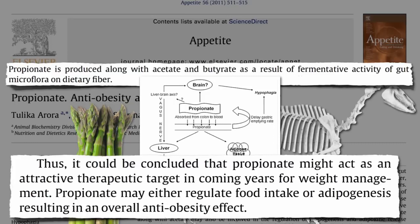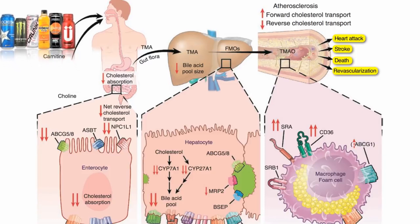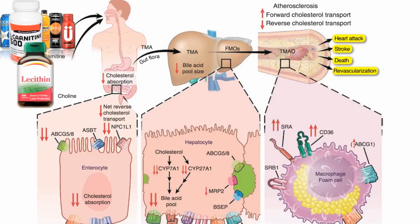So eat fiber, select for fiber-eating bacteria. But if you eat a lot of animal products, you may instead be selecting for animal-product-digesting bacteria, and some of those waste products like trimethylamine may be harmful. Even if you eat vegan, though, you're not necessarily out of the woods if you regularly drink carnitine-containing energy drinks, take carnitine supplements, or lecithin supplements which contain choline — presumably you'd foster and maintain those same TMAO-producing bacteria and increase your risk of heart disease and perhaps cancer.